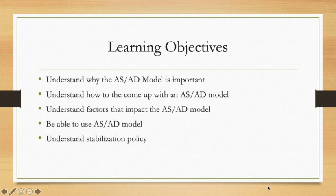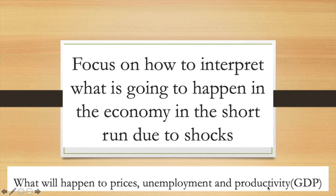This particular chapter is going to be focusing on the short run specifically and we will not be discussing the long run. The main focus is going to be how to interpret what's going on in the economy in the short run due to unforeseen events happening in the economy, like the coronavirus. We want to figure out what happens to prices, unemployment and GDP when such unforeseen events happen.